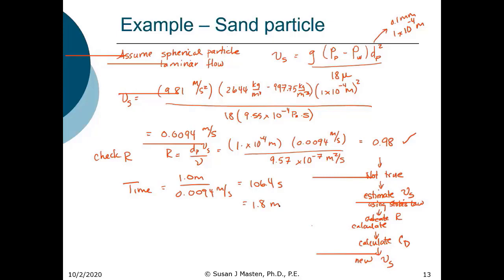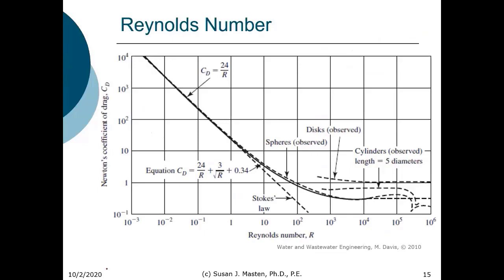We will use this approach extensively in filtration. Here is a plot of the coefficient of drag versus Reynolds number. You can see the coefficient of drag as 24 divided by Re for laminar flow, and you can see how it deviates — we need the more complicated equation if we're in that transition zone.